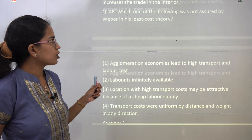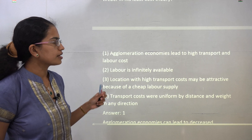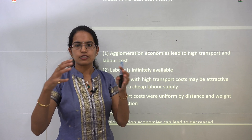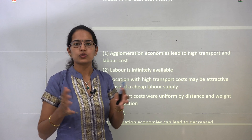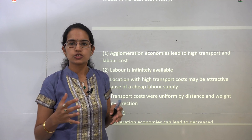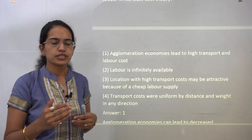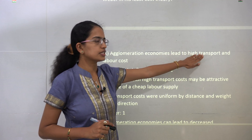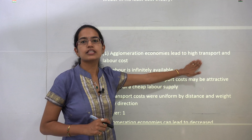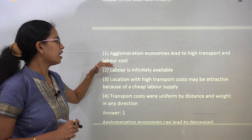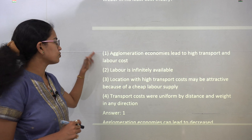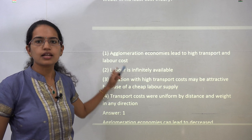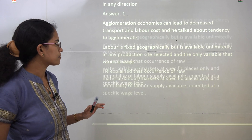Weber's least cost theory talked about the tendency to agglomerate — he said industries tend to come closer to one another to share resources and achieve economies of scale. However, he did not talk about this agglomeration leading to higher cost or higher transport and labour costs. So statement one is incorrect; the rest of the three statements are assumptions laid down by Weber.